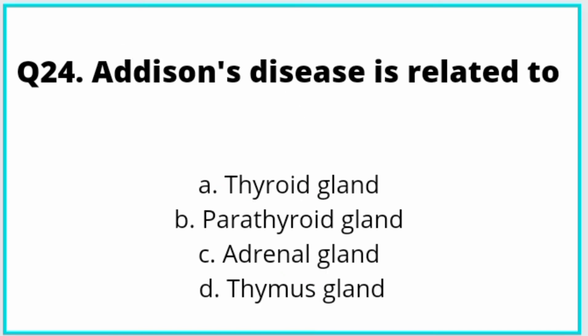Question number 24: Addison's disease is related to which gland? Option C is correct: adrenal gland.